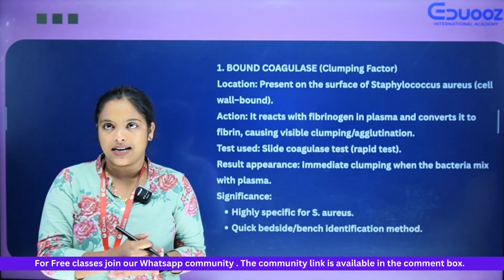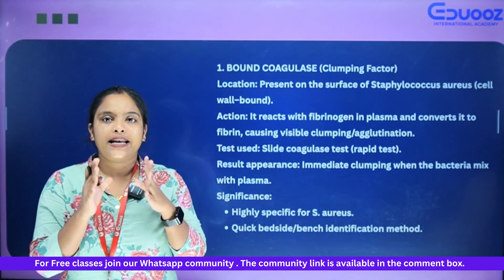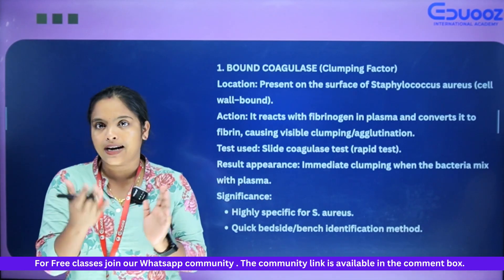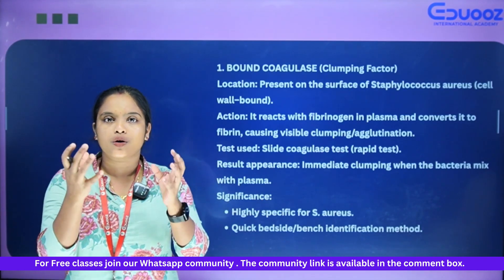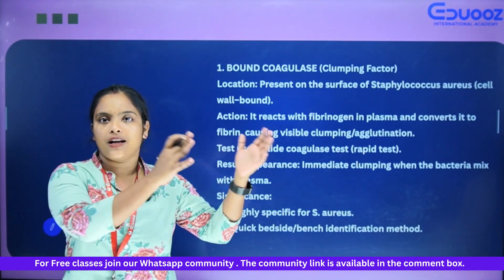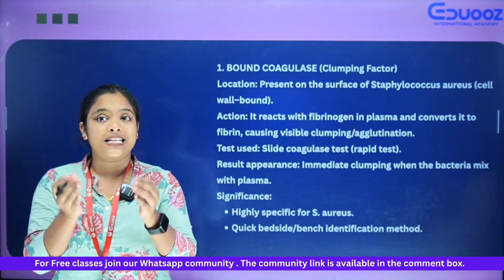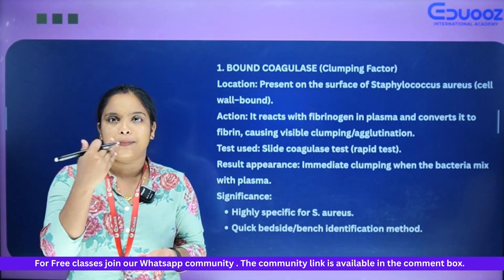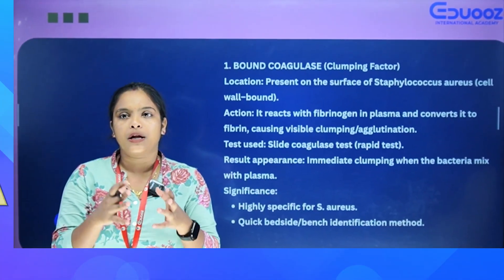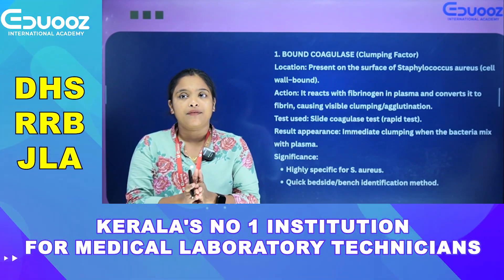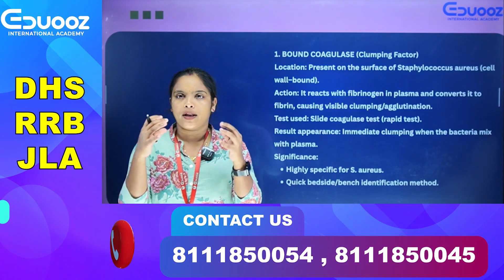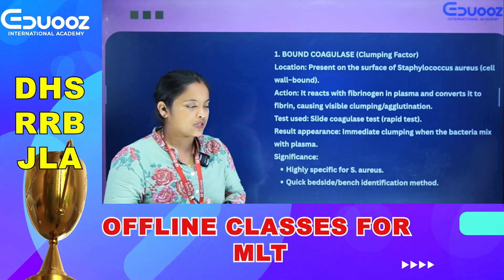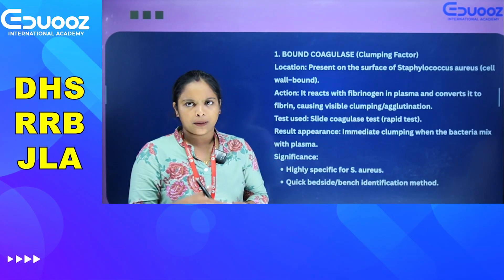Bound coagulase is a cell wall-bound protein. It interacts with fibrinogen and converts it to fibrin, causing visible clumping. This test is called the slide coagulase test. It is rapid — the result is immediate clumping when bacteria are mixed with plasma. The significance is that it is highly specific for Staphylococcus aureus and is a quick bench identification method, giving results in about 2 minutes.